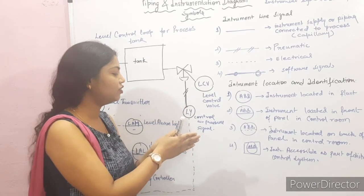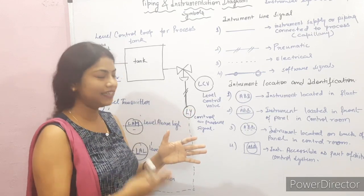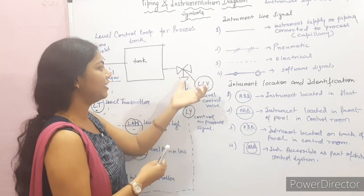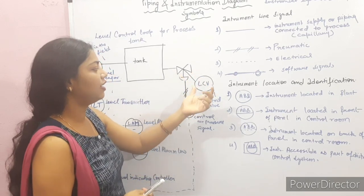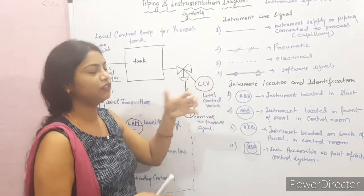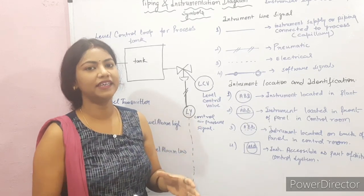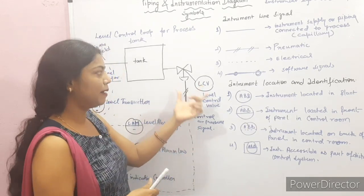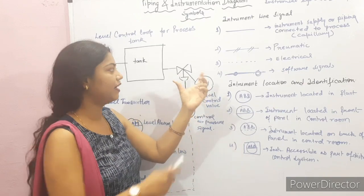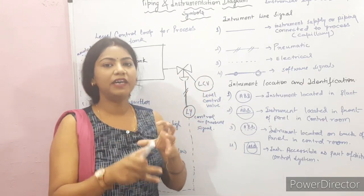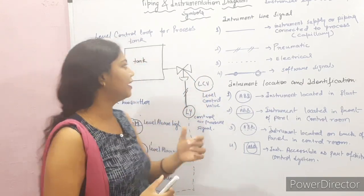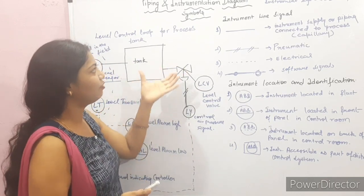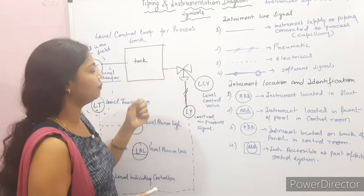The control signal — an air pressure signal — is sent through pneumatic lines to the level control valve. Then there is a comparison between the set point and the measured level. After comparison, the valve will open or close by a particular amount to maintain the level in the tank according to the set point.